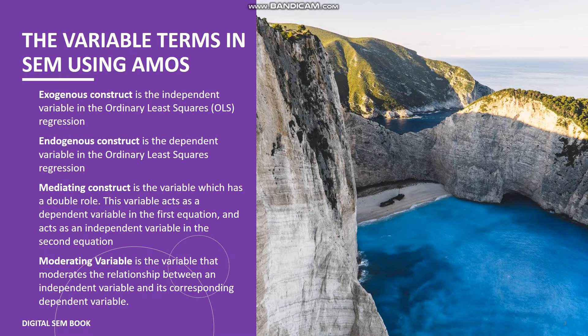Mediating construct is the variable which has a double role. This variable acts as a dependent variable in the first equation, and acts as an independent variable in the second equation.